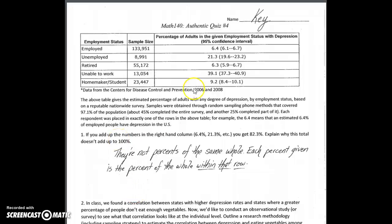On number one, it's more about figuring out what this table is saying. For example, 6.4 means that 6.4% of employed people have depression. This number could be up to 100% if 100% of the employed people surveyed had depression. The unemployed is a different category — each of these could be anywhere between 0 and 100%. The basic point is they're not percents of the same whole. This 6.4% is not part of the same whole as this 9.2%, so it wouldn't make sense for them to add up to 100.